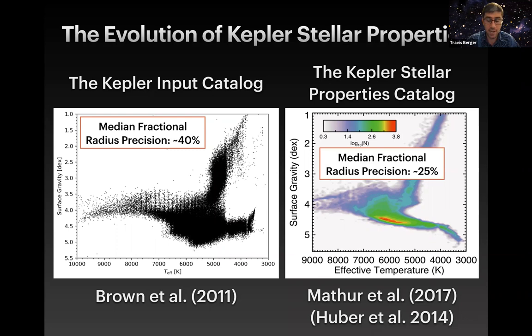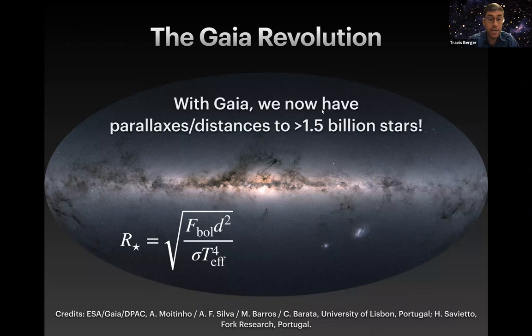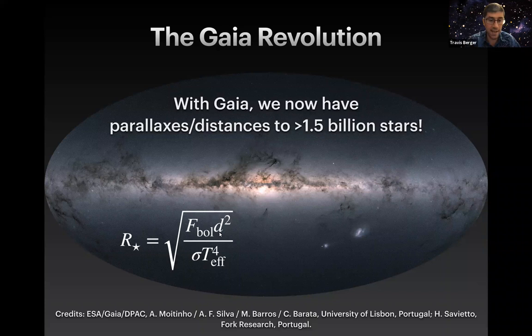So how do we fix that problem? Fortunately, Gaia DR2 dropped in April 2018. With Gaia, we now have parallaxes and can infer distances to over 1.5 billion stars, which includes the vast majority of stars within the Kepler field. The Stefan-Boltzmann law, solved for the radius of the star, shows that before Gaia DR2 we had relatively good constraints on volumetric flux and effective temperature, but not on distances. Thanks to Gaia DR2, we can now finally constrain those distances.